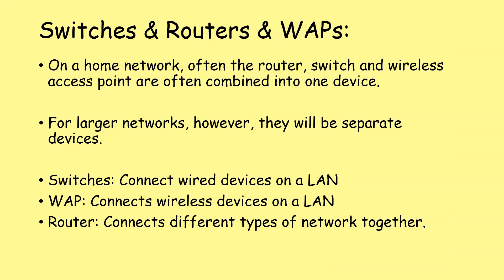On a home network, the router, the switch, and the wireless access point are often all combined into a single device. At home you might just have one device that is all three combined. On a larger network like an office, school, or university, we do tend to separate the functionality. Remember: switches connect wired devices to a local area network, a wireless access point connects wireless devices to a local area network, and routers connect different types of networks together. Don't get these confused in the exam — they can look similar but have different functionality.